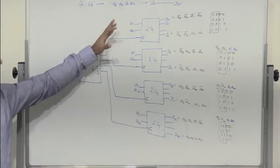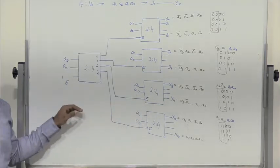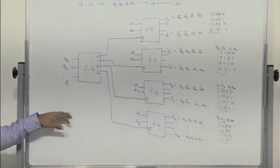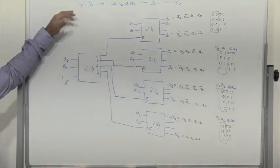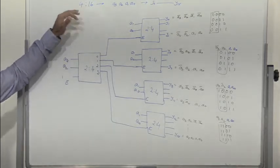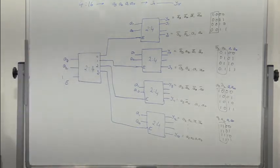This is how we can configure a 4x16 decoder using 2x4 decoders. We need 5 two-to-4 decoders to implement a single 4x16 decoder.